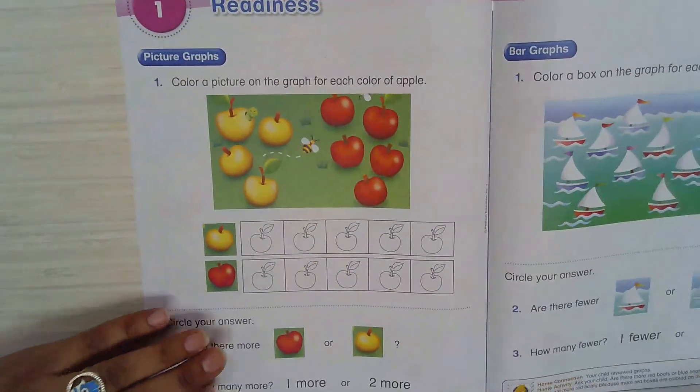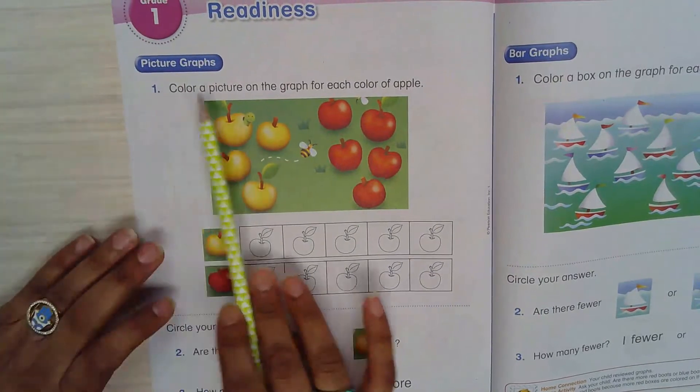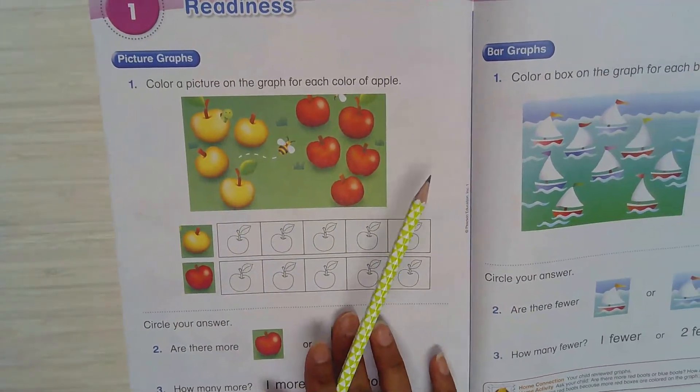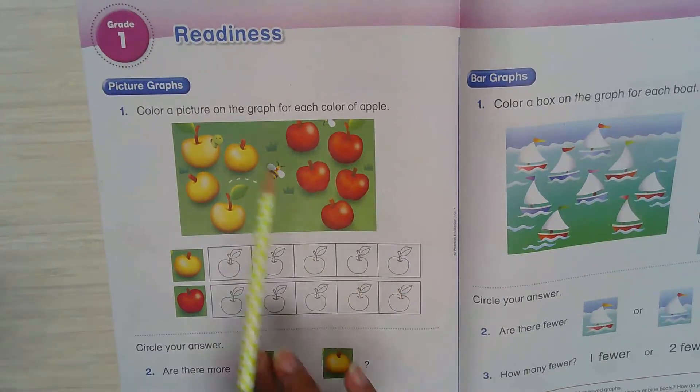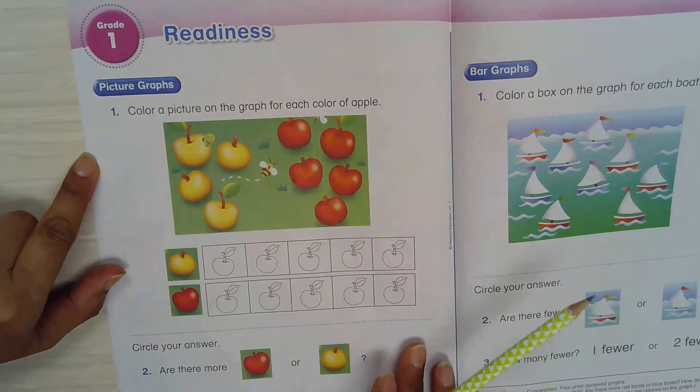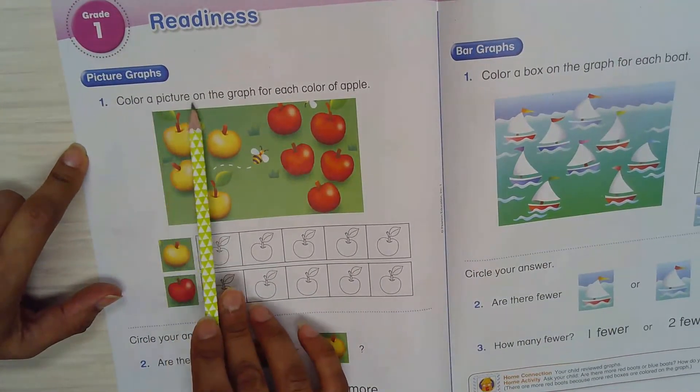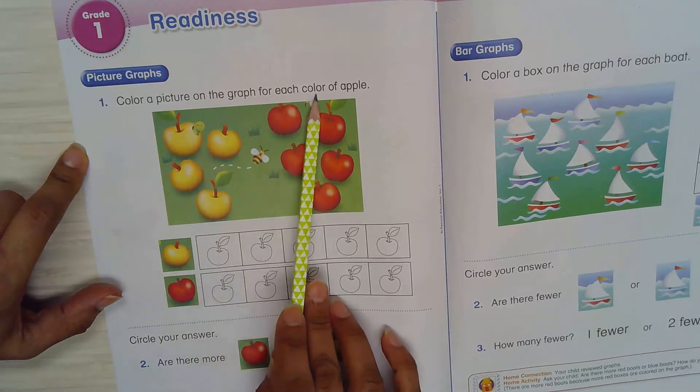All right, let's see inside first. Picture graphs - don't worry, we will learn a lot about this, just plain information, just getting ready. Color a picture on the graph for each color of apple.